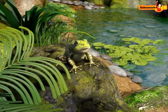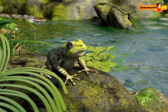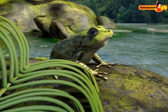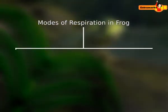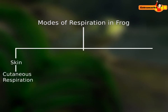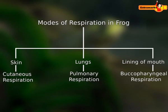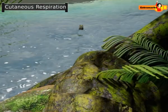When a tadpole metamorphoses into an adult frog, it develops lungs for breathing air on land. A frog is able to exchange oxygen and carbon dioxide through skin — that is cutaneous respiration — lungs, that is pulmonary respiration, and the lining of the mouth or buccal cavity, that is buccal pharyngeal respiration.